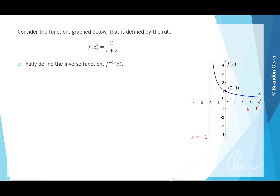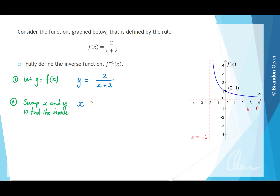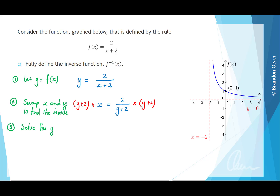For part c, we want to fully define the inverse function. Step 1 is to let y equal f of x, giving us y equals 2 divided by x plus 2. Step 2 is to swap x and y to find the inverse, giving x equals 2 divided by y plus 2. Step 3 is to solve for y — we start by multiplying both sides by y plus 2, giving x y plus 2x equals 2.